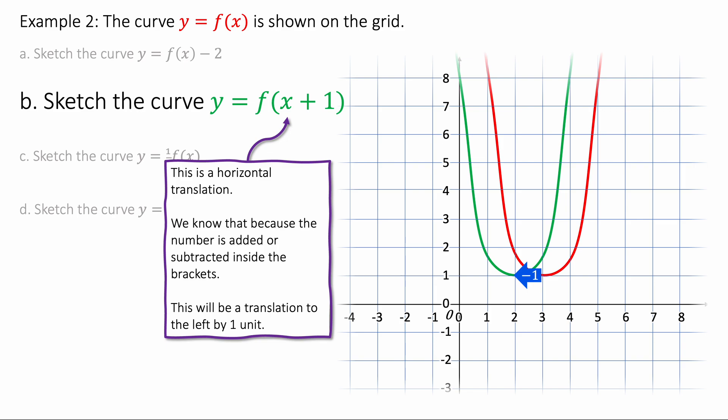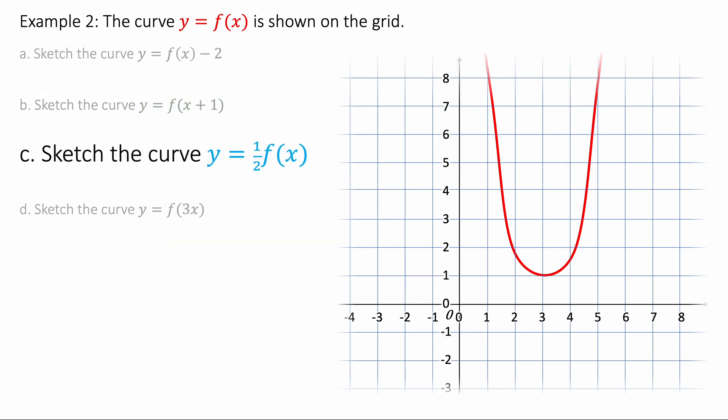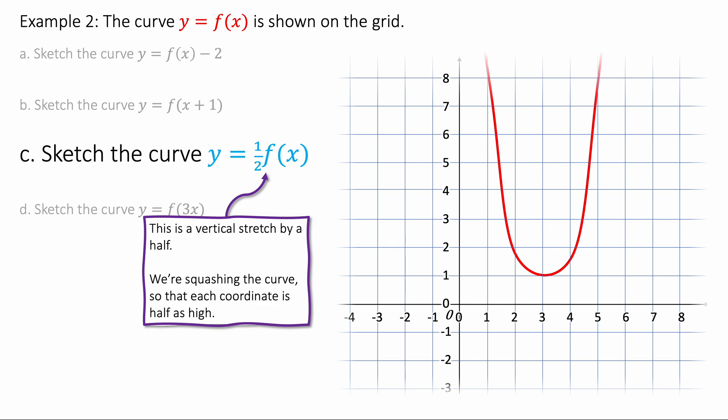Just remember when it's inside the brackets, it's kind of doing the opposite of what you'd expect. So if it's f of x plus 1 in the brackets, you move it more negative by minus 1. Sketch the curve half f of x. And it's a vertical stretch by half. So it's like we're squashing because we're halving the size of the curve. And so each y coordinate will be halved. And it looks like this. Just look at how all the y coordinates on this curve are half as high as the previous curve.